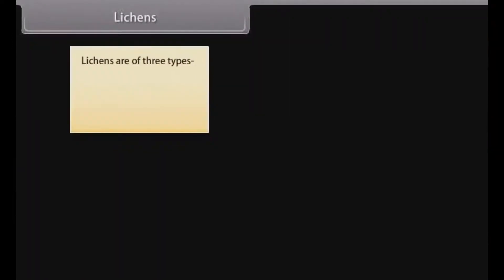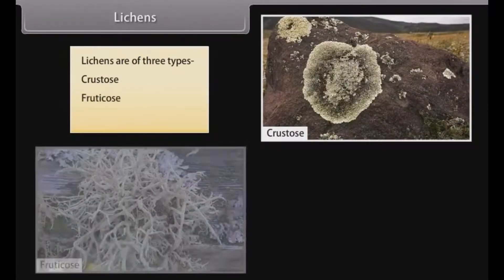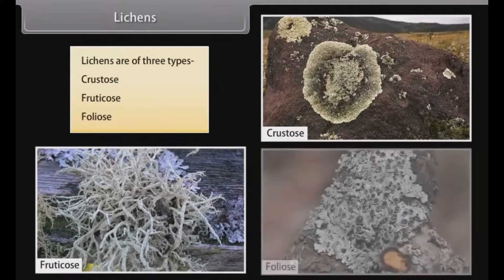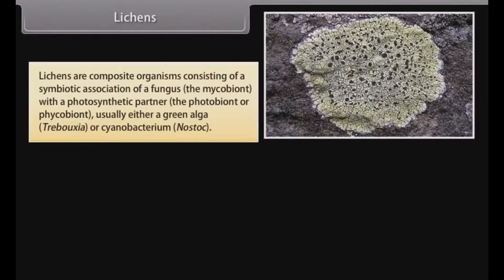Lichens are of three types: crustose, fruticose, and foliose. Lichens are composite organisms consisting of a symbiotic association of a fungus — the mycobiont — with a photosynthetic partner — the photobiont or phycobiont — usually either a green algae, commonly Trebouxia, or a cyanobacterium, commonly Nostoc.